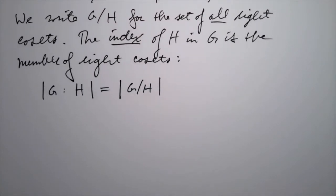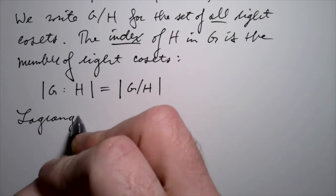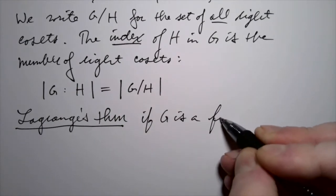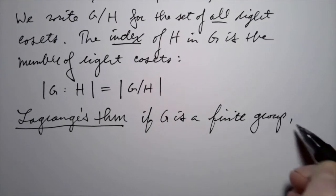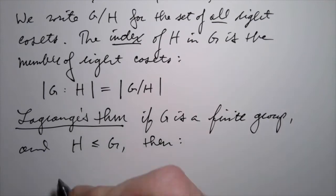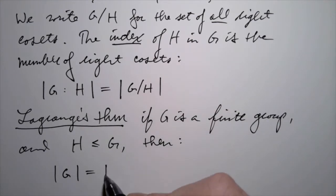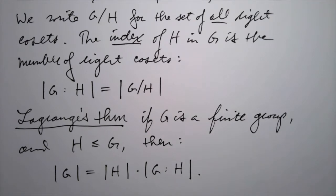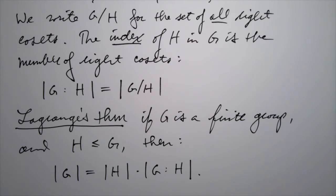Now let's recall the statement of Lagrange's theorem. It says the following: if G is a finite group and H is a subgroup of G, then the order of G is equal to the order of H times the index of H in G. That's the statement of Lagrange's theorem. It justifies this notation G divided by H for the number of cosets, because the index — the number of total right cosets — is exactly the size of G divided by the size of H.